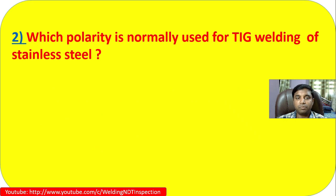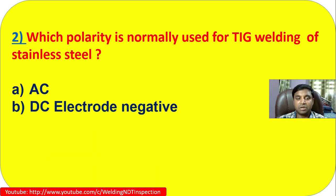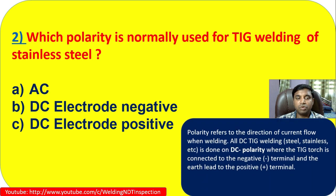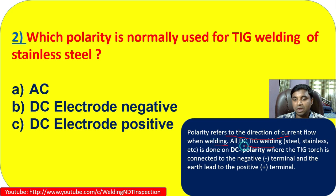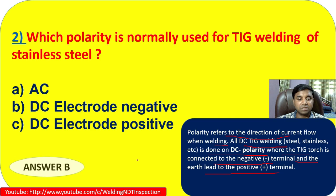Question 2: Which polarity is normally used for TIG welding of stainless steel? Options are: A) AC, B) DC electrode negative, C) DC electrode positive. Polarity refers to the direction of current flow when welding. All DC TIG welding of stainless steel is done on DC negative polarity, where the TIG torch is connected to the negative terminal and the earth lead to the positive terminal. So the answer is B, DC electrode negative.